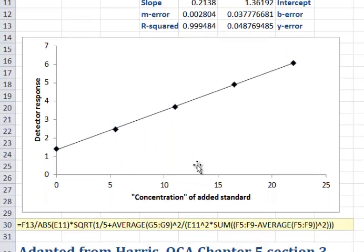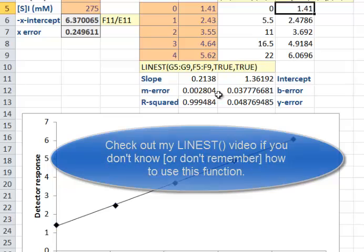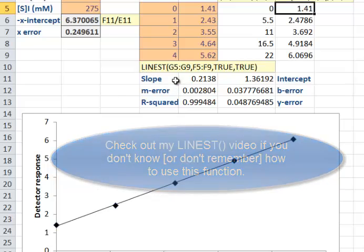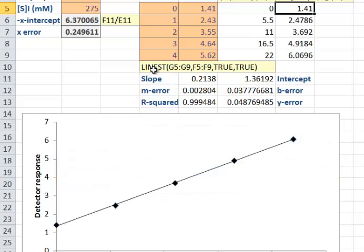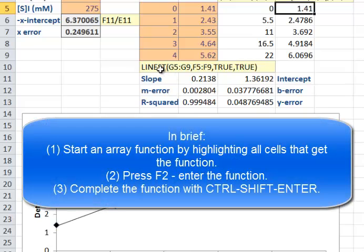I plotted those and fancied up the graph to get the concentration of the added standard and the detector response. We get a nice straight line. I use the LINEST command to figure out the slope and the intercept plus the corresponding errors for this best fit line. Remember this is an array function. We've talked about array functions in the past, so I'm not going to discuss them at this point. There is another video to take a look at that if you'd like.